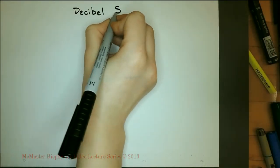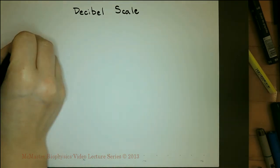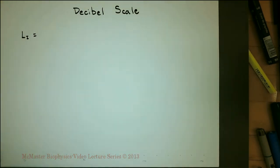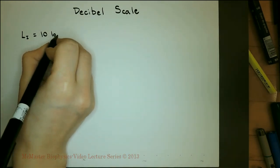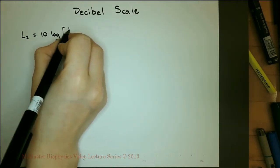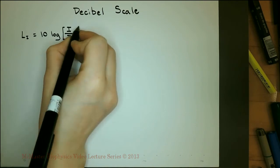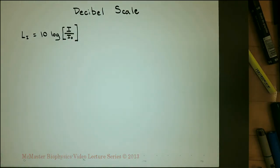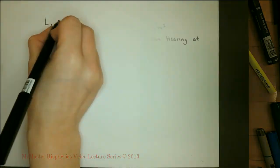The decibel scale compares the intensity of sound to the threshold of human hearing. The decibel level of a sound is defined by this equation, where L sub i is the decibel level, I is the intensity of the sound, and I naught is the threshold of human hearing — 10 to the power of negative 12 watts per meter squared.